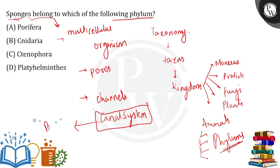The canal system is a characteristic feature of the phylum Porifera. Hence, sponges belong to option A, which is Porifera.